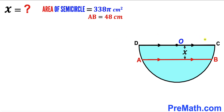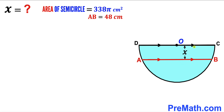In this video we have a blue semicircle with center O such that the area of this semicircle is 338π cm². Chord AB is 48 cm long, and diameter CD is parallel to chord AB. The distance between this chord and the diameter is represented by x, and our task is to calculate the value of this distance x.